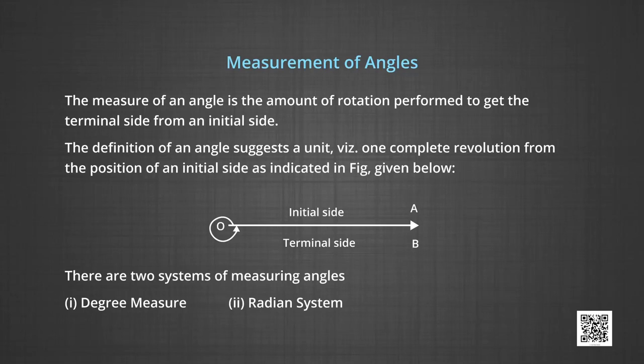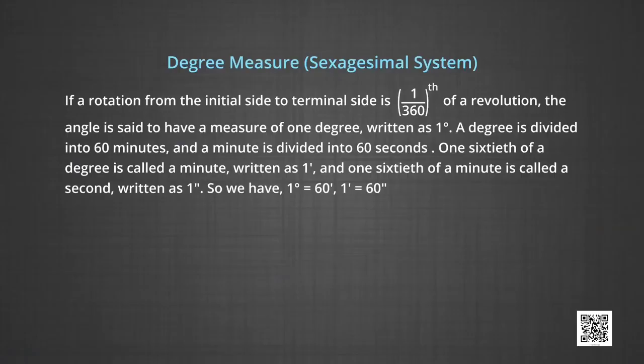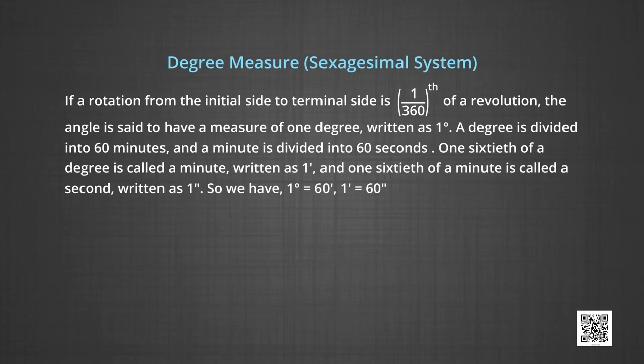There are two systems of measuring angles. The first one is the degree measure and the second one is the radian system. Let us now study the degree measure. Another name for degree measure is the sexagecimal system. If a rotation from the initial side to the terminal side is 1/360th of a revolution, the angle is said to have a measure of 1 degree, written as 1°. A degree is divided into 60 minutes and a minute is divided into 60 seconds.